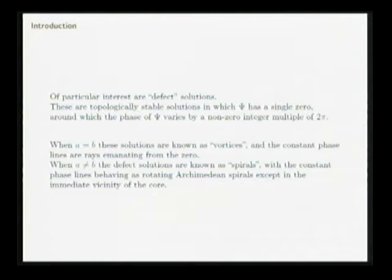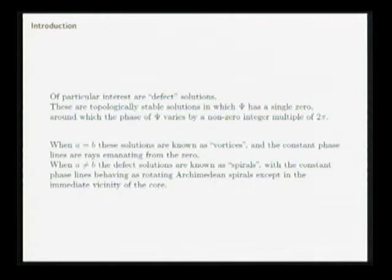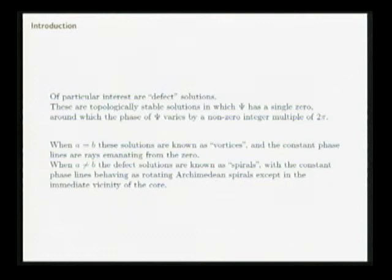When A and B are real and equal, the defect solutions are vortices — that's the case we'll hear about during the week. Defect solutions are topologically stable solutions where you have a zero of the order parameter, a zero of this wave function psi, and the phase of psi varies by an integer multiple of two pi as you circle the defect.